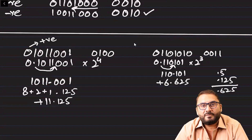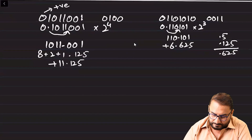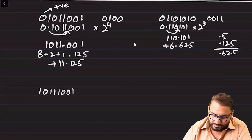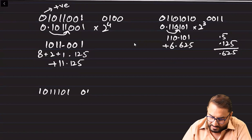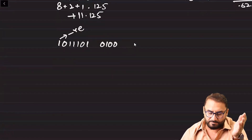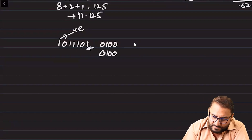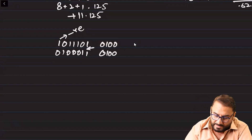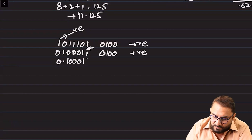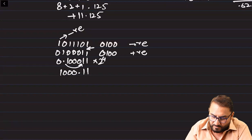That is how we solve a positive floating point number and convert it to denary. Now let's solve a negative one. We have 1011 1001 — one two three four five six seven eight — and the exponent is 0100. As we can see this is a negative number, so first we convert it back to positive: keep the exponent same, to the first one keep it same, and flip the rest. Then we start solving it: 0.11100011 times two to the power four.